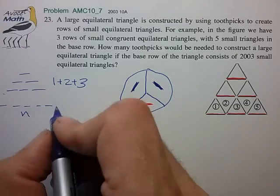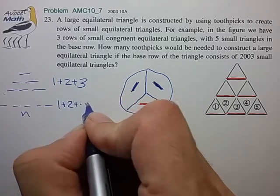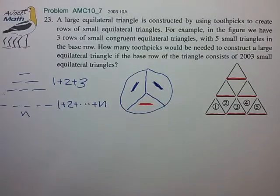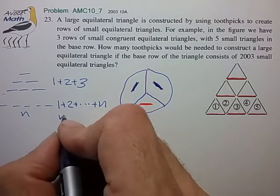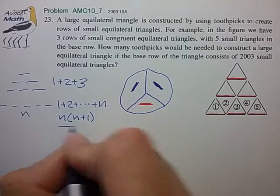toothpicks then the total count would be 1 plus 2 plus all the way up to n and that we should recognize is a pretty simple arithmetic series and this is a formula you should probably have in your back pocket.